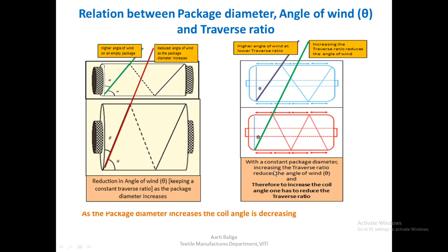With a constant package diameter, increasing the traverse ratio — suppose from 1.5 to 2 — would it affect the angle theta? Looking at diagrams where package diameters are almost equal: at lower traverse ratio, theta is high; at higher traverse ratio, theta is lower. So increasing the traverse ratio reduces the angle of wind. The moment we keep increasing the traverse ratio from 1.5 to 2 to 3, theta goes on reducing. With a constant package diameter, increasing the traverse ratio reduces the angle of wind.